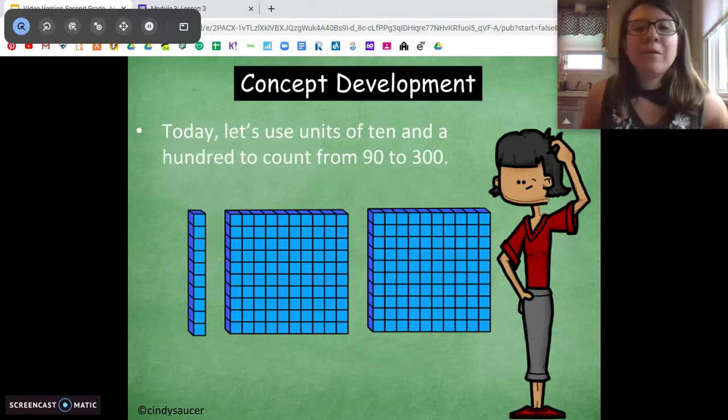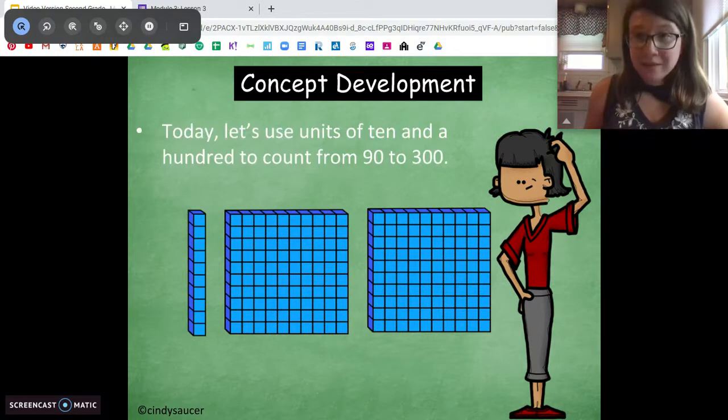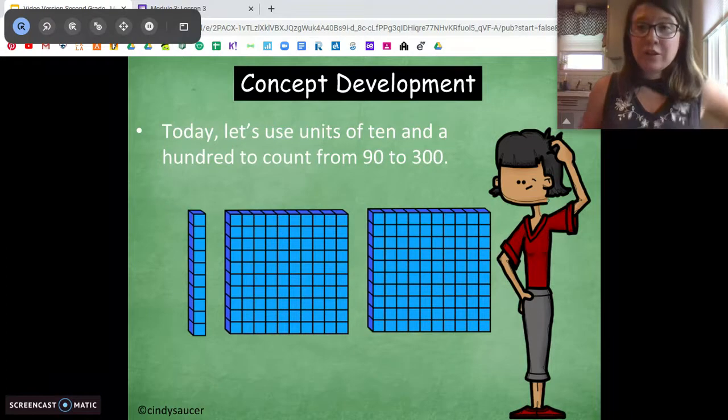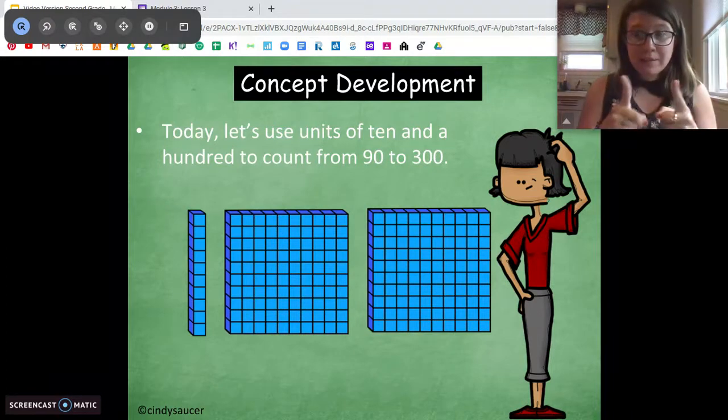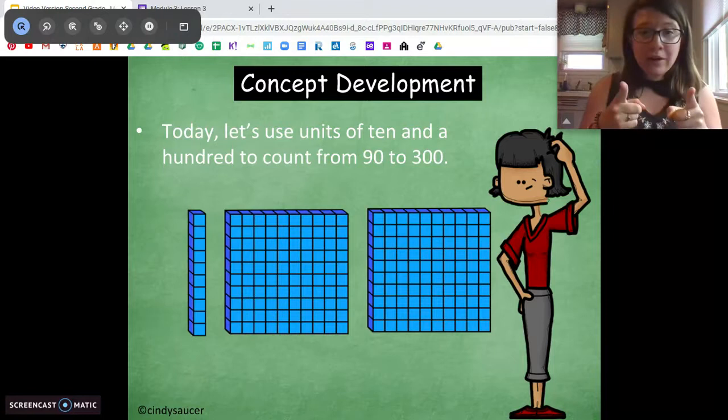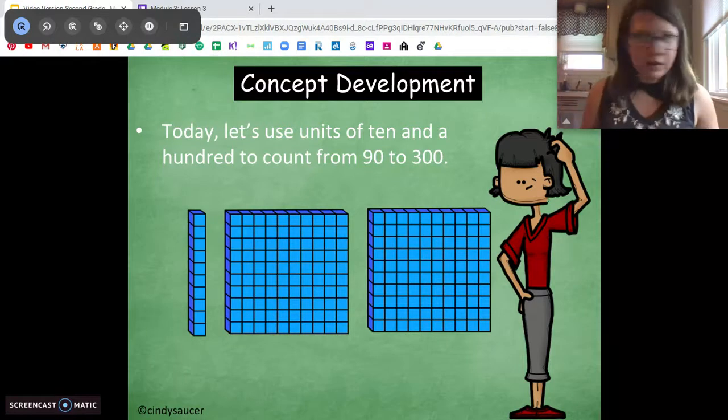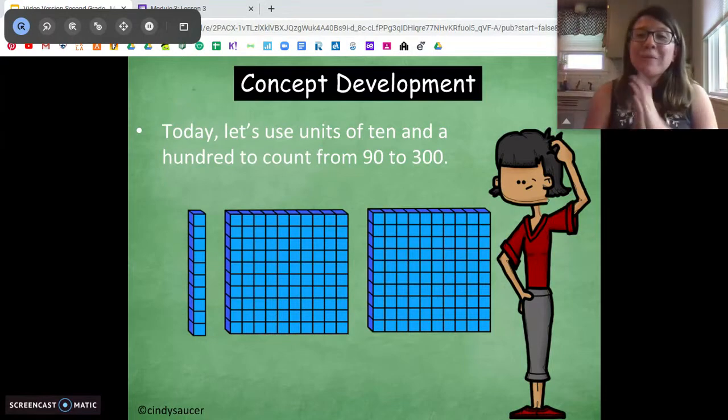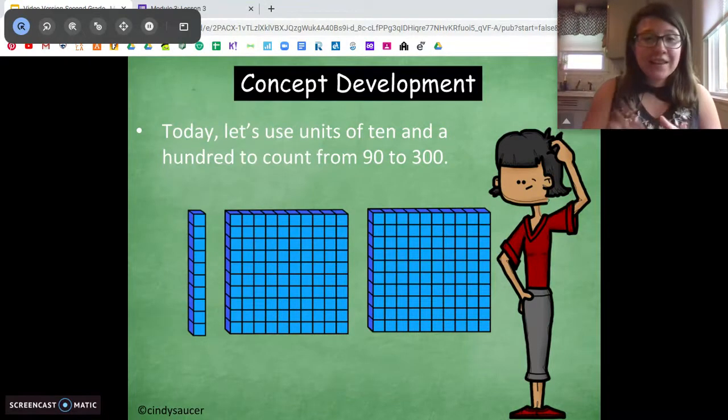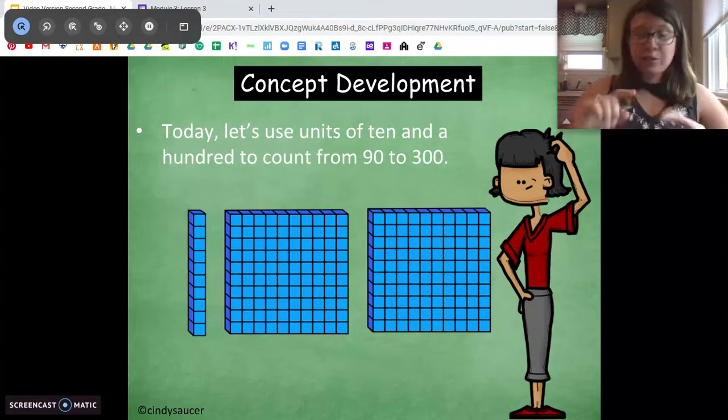Okay. So today we're going to use units of 10 and 100 to count from 90 to 300. So this is where I made my mistake yesterday. If you watched the video yesterday, you saw me get all flabbergasted. I made a mistake when we were doing the problem set. That happens. I'm human. What we want to do is get to the next ten.